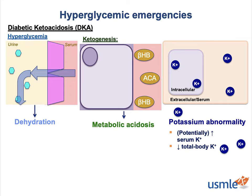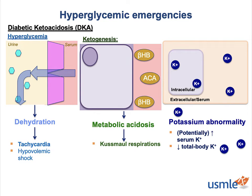The signs, symptoms, and complications of DKA are all related to these three pathophysiologic components. The dehydration means these patients generally come in tachycardic, with extreme cases presenting with hypovolemic shock. The acidosis leads to some of the most characteristic symptoms. The body compensates for metabolic acidosis through hyperventilation — in DKA, through very rapid and deep breaths called Kussmaul respirations. Also characteristic of DKA is severe nonspecific epigastric pain, nausea and vomiting, and the smell of acetone on the breath, which may be described as fruity or like pear drops.